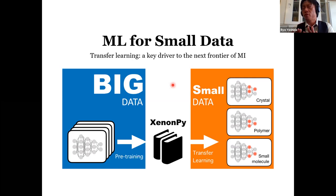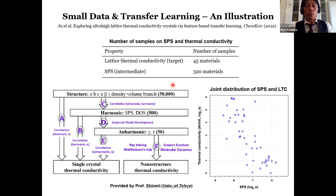ここで大きなハードルが立ち上がります。私たちのデータセットは他のデータ科学の応用分野に比べると極めて小さく、スモールデータを取り扱う必要があります。ハイスループット実験技術が進んでいますが、データが取れる領域と取れない領域のコントラストははっきりしており、このスモールデータの問題にいかにアプローチするかが非常に重要になります。